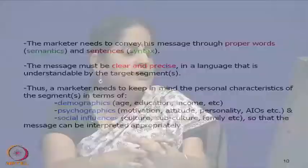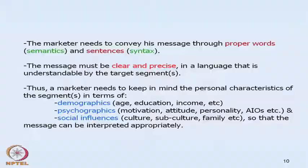Marketers must keep in mind personal characteristics in terms of demographics such as age, education, and income levels; psychographics such as personality, perception, attitude, activities, interests, and opinions; and social influences such as culture, subculture, cross-culture, and family — so that the message can be properly interpreted by the target audience. The message should be conveyed with right use of words, right use of sentences, clear, short, and simple with no ambiguity, keeping in mind the target segment's demographics, psychographics, and social influences.